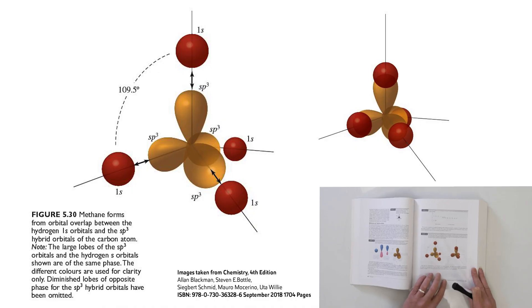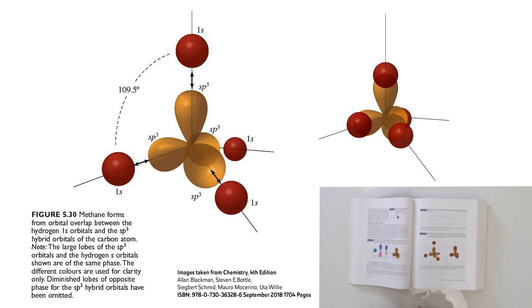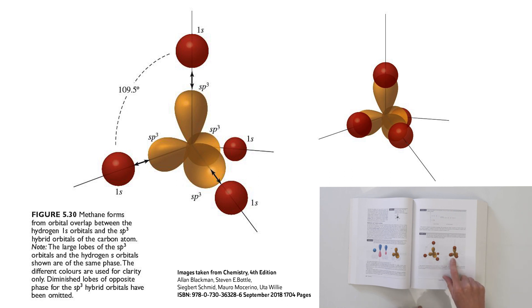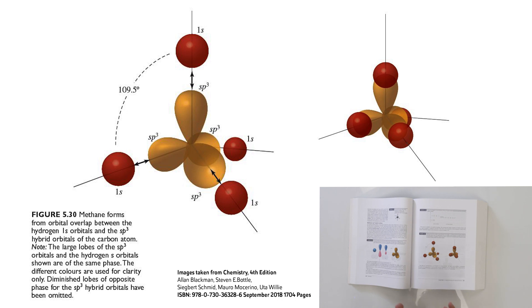Now we can make methane from that, as shown in this diagram. Here are your four sp3 hybrid orbitals, tetrahedrally arranged, and each contains a single electron. These can now overlap with a hydrogen 1s orbital that also contains a single electron — here, here, here, and here. They overlap in a bonding fashion, and you end up with a methane molecule, CH4, where the orbitals around the central carbon are tetrahedrally arranged. You've formed four single CH bonds.